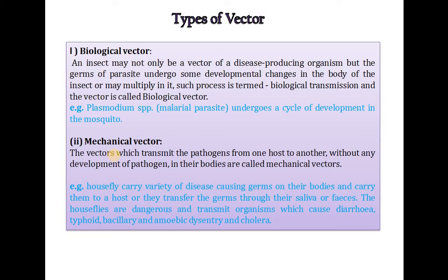The first type of vector is the biological vector. An insect may not only be a vector of a disease-producing organism, but the germs or parasites may undergo some developmental changes in the body of the insect, or may multiply in it. Such a process is termed biological transmission and the vector is called a biological vector. The example is Plasmodium species, the malarial parasite, which undergoes a cycle of development in the mosquito.